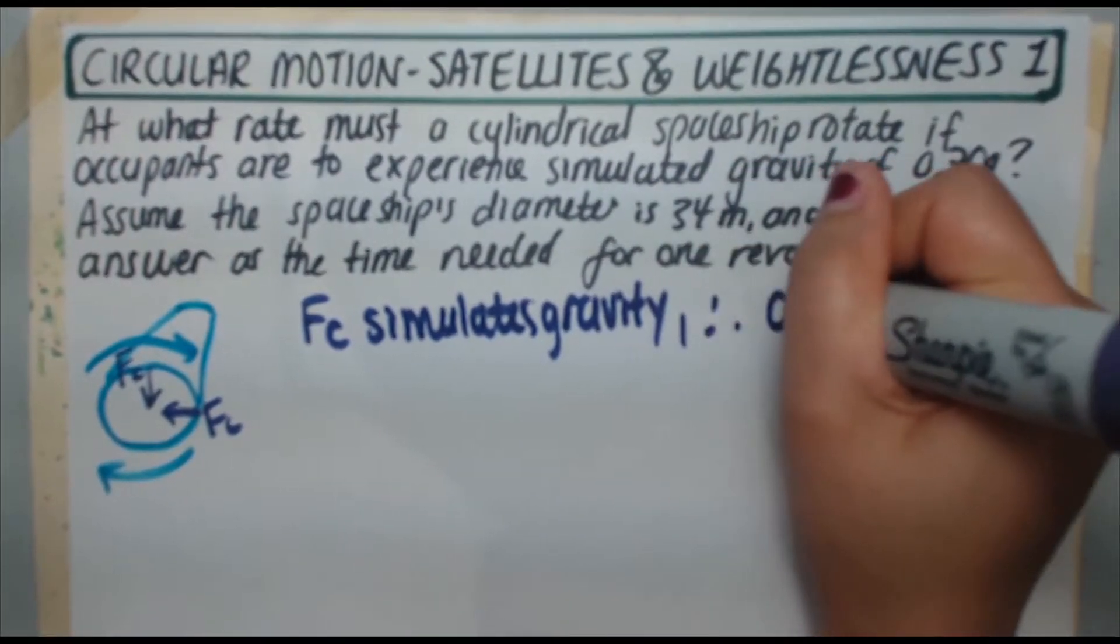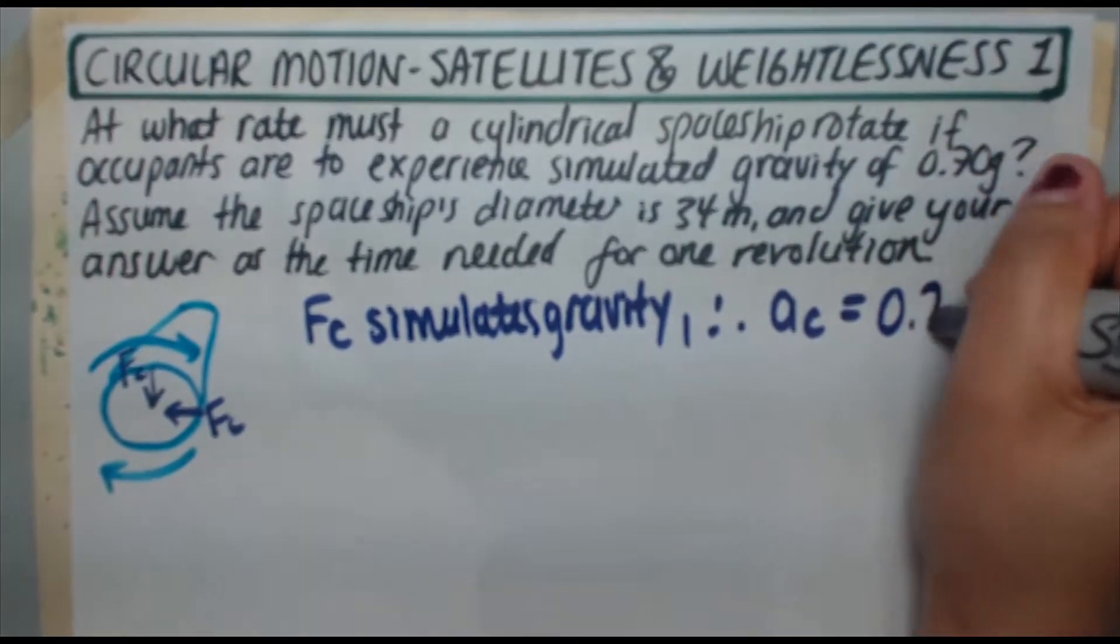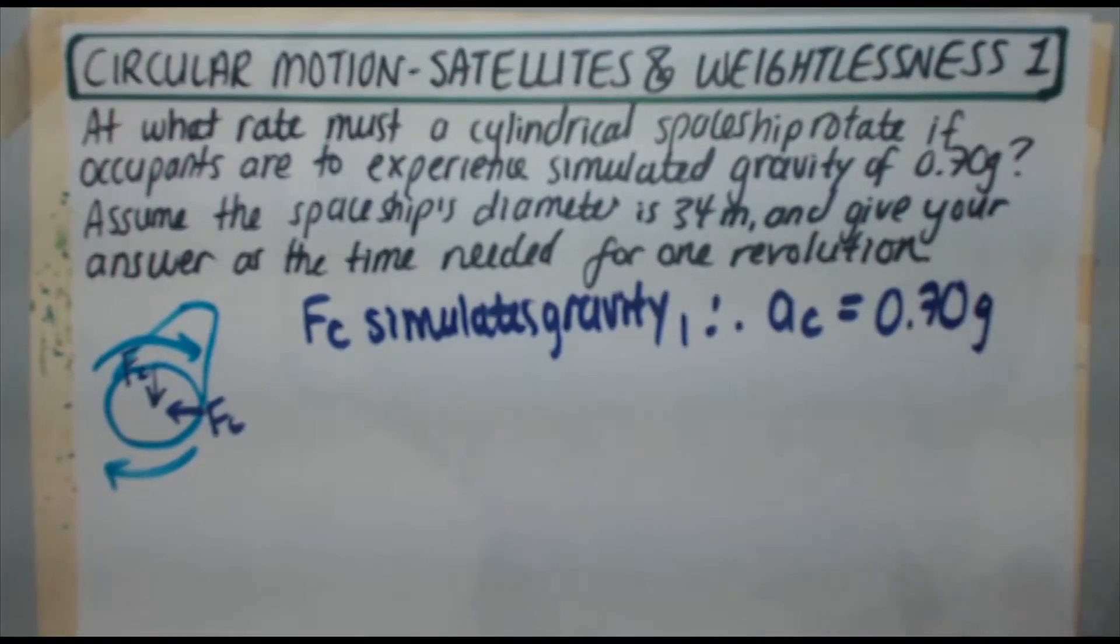We're actually just going to set ac equal to 0.70g because that's what we're trying to do. We're trying to get the centripetal acceleration to be equal to 70 percent the acceleration due to gravity on Earth.